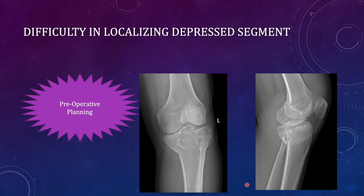The first difficulty is the localization of depressed fragments. Planning starts from the preoperative period. In radiographs, on the AP view we can see there is depression, but on the lateral view we are not sure whether the depressed fragment is localized in the anterior or posterior part, because the medial condyle and lateral condyle subcondylar bones overlap. Therefore higher investigation in the form of CT is required.